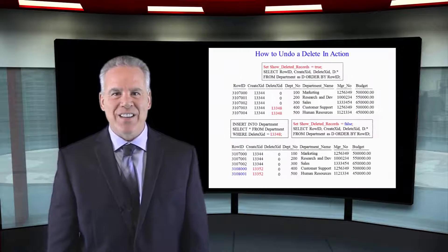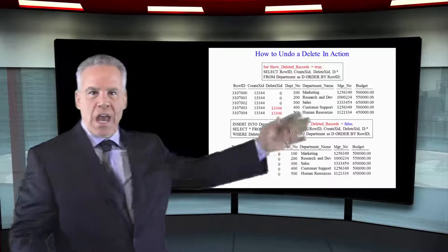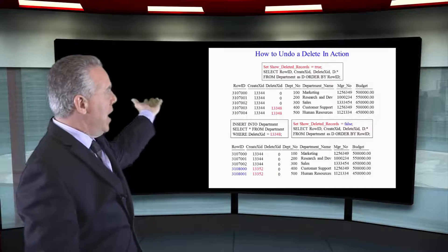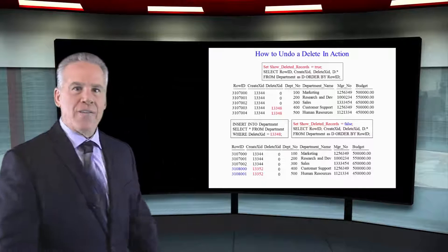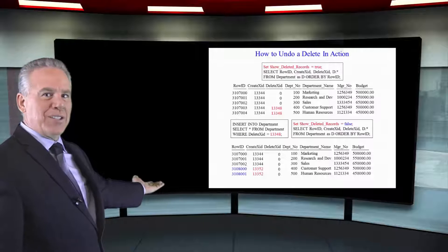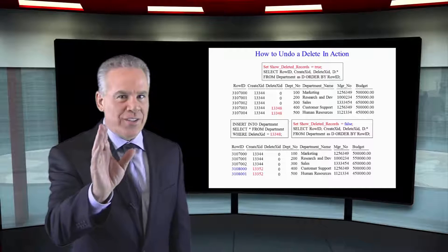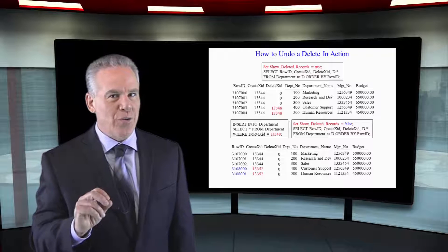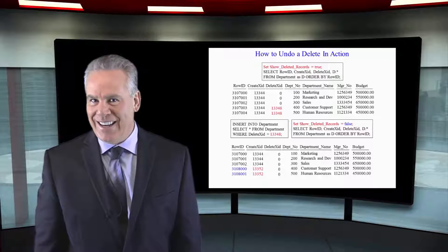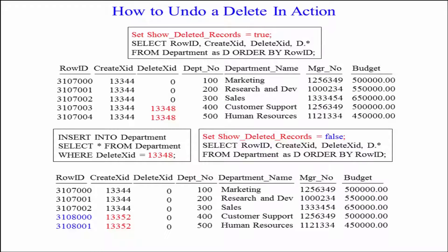Let me explain this. Take a look at the top — this is what we saw on the previous slide, and you can see that we have those deleted rows. Then we reinserted those based on the delete XID, and as you can see at the bottom, everything is back pretty much to normal, but you can see that those two rows have a different create XID, but when the user queries, they're going to get these rows back.